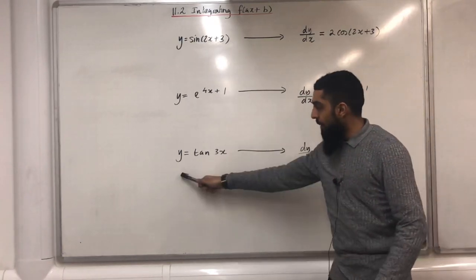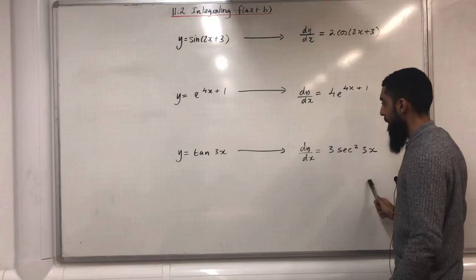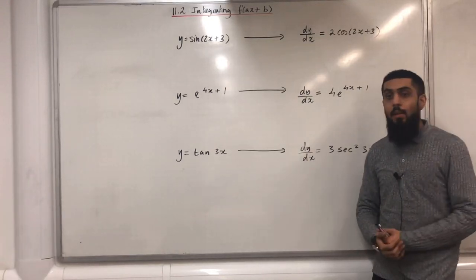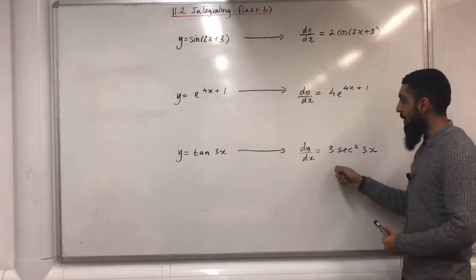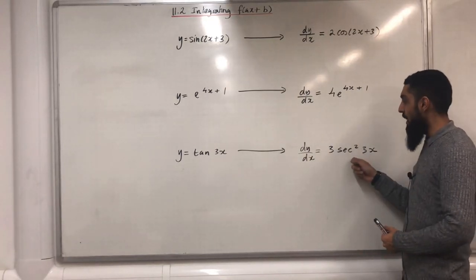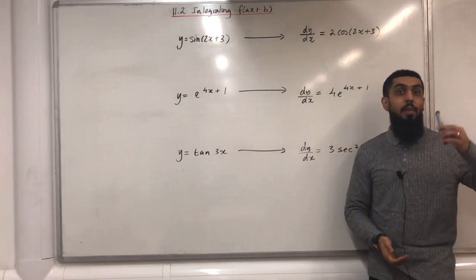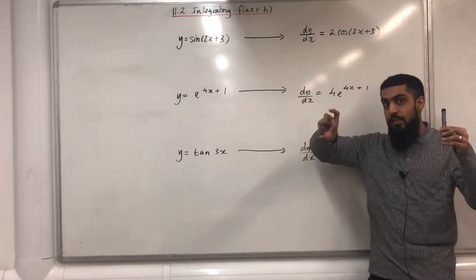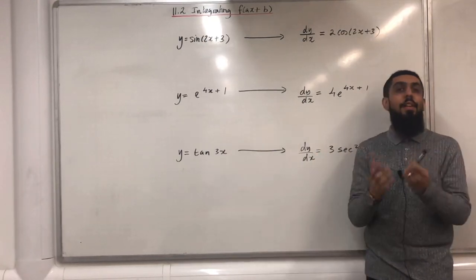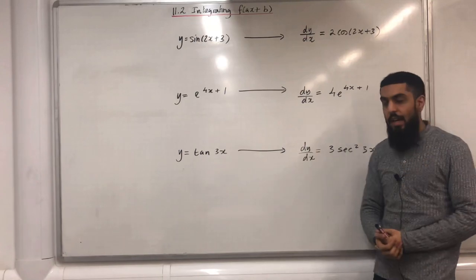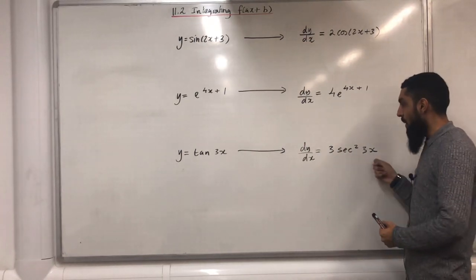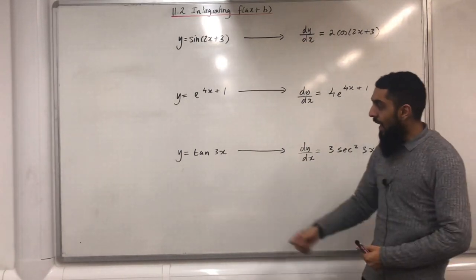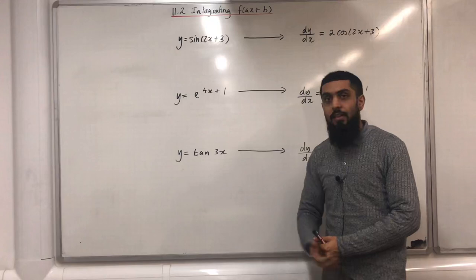The third line. When y is equal to tan(3x), I know that dy/dx is equal to 3sec²(3x). Going from dy/dx back to y is called integration. Therefore I can conclude that the integral of 3sec²(3x) will just be tan(3x) + c.